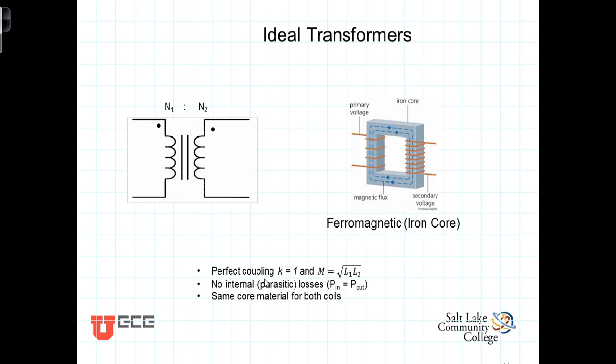This perfect coupling is accomplished by wrapping both coils around a common core type material of ferromagnetic material, so that the approximation is that all of the flux, all the magnetic field generated by this coil, is transferred through this ferromagnetic material and is coupled by the other winding.